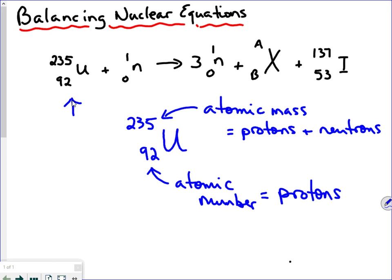So when we write the name of this element, or this isotope, we want to distinguish which one it is. This is uranium-235, so we call this uranium-235.